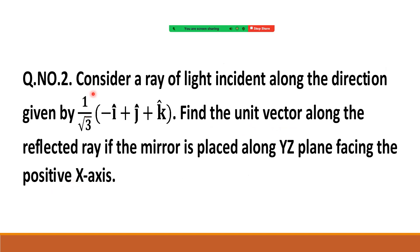Problem 2: Consider a ray of light incident along the direction (1/√3)(−i-cap + j-cap + k-cap). Find the unit vector along the reflected ray if the mirror is placed along the y-z plane facing the positive x-axis.